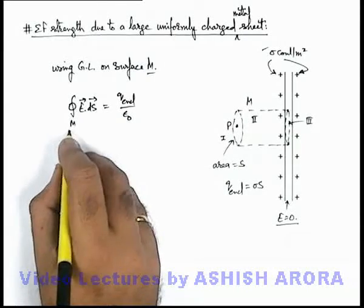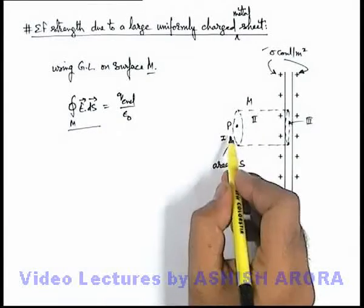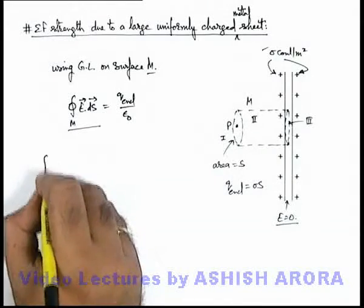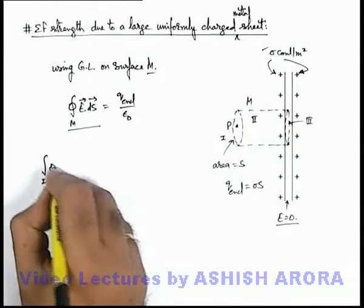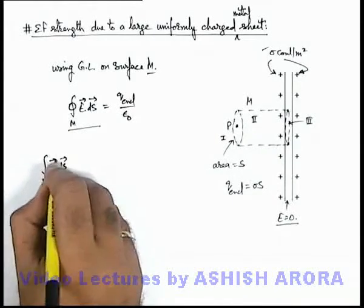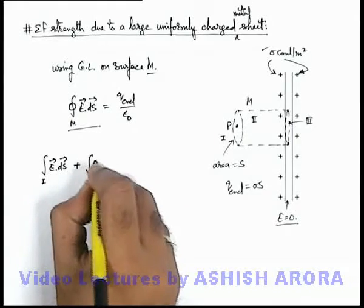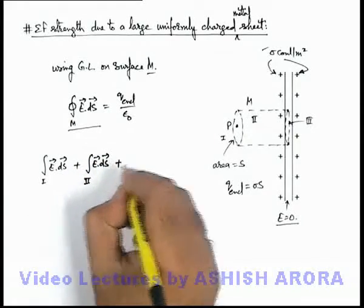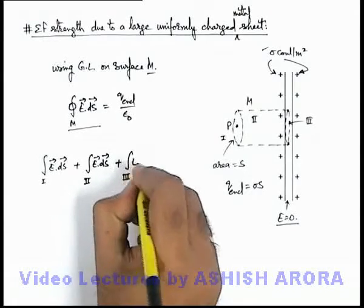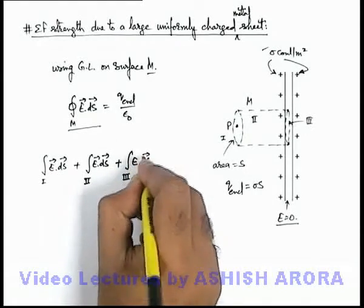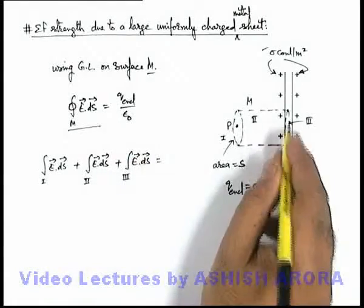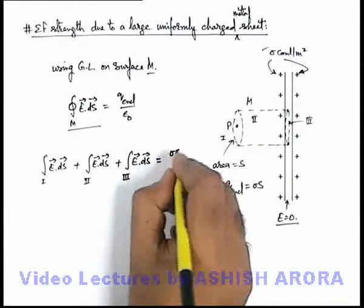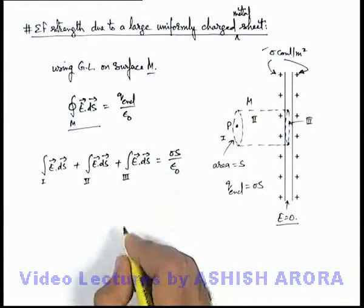In this situation, this integral can be split in three parts for the three surfaces, so it is E dot dS for the first face, plus integration of E dot dS for the second face, plus integration of E dot dS for the third face, is equal to the enclosed charge in this surface, sigma S by epsilon not.